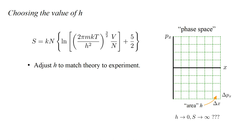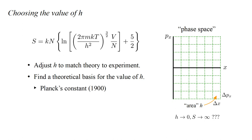One approach would be to experimentally determine the absolute entropy of a gas system and then adjust h in our formula to agree with the measurement. Or maybe there is some theoretical basis for the value of h. At the time Sackur and Tetrode were working on this formula, there was a good candidate for the smallest unit of action in a mechanical system: Planck's constant, proposed in 1900. This has the very small but non-zero value, 6.6 times 10 to the minus 34 joule-seconds.